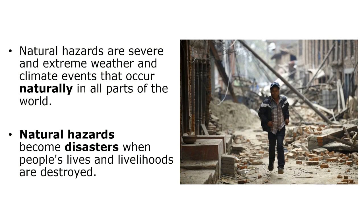An earthquake, just like other extreme weather events, are naturally occurring in all parts of the world and we refer to them as natural hazards. There's no way for us to stop a natural hazard from happening. But when people's lives and livelihoods are destroyed, then a natural hazard will become a disaster. So an earthquake in a remote area where there's no people, no houses, no infrastructure — that is not a disaster.